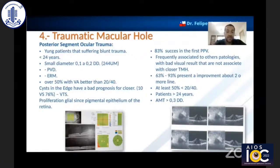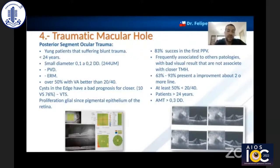If you see glial proliferation from the RPE, it is a good sign for closure. In other cases, when surgery is necessary, it will be performed with PPV. The anatomical closure rate is quite high at more than 80% of patients achieving closure. However, the visual acuity results are slower to recover than with spontaneous closure.